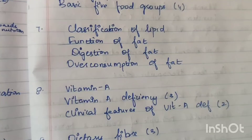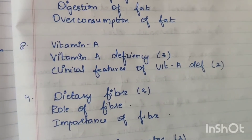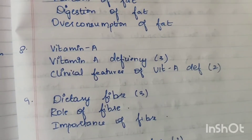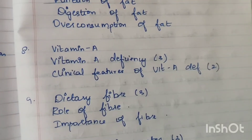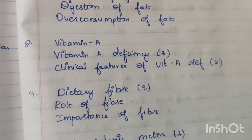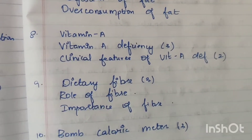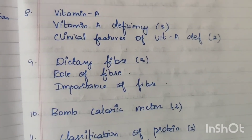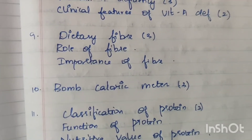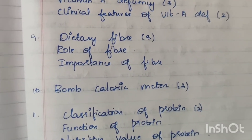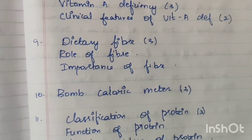If you study fat as a combined topic, you will complete all related questions. Next: Vitamin A — the role of nurse in the national Vitamin A deficiency program — 2 times at 15 marks. Dietary fiber — 3 times. Role of fiber — 1 time. Importance of fiber — 1 time; role and importance are similar answers.